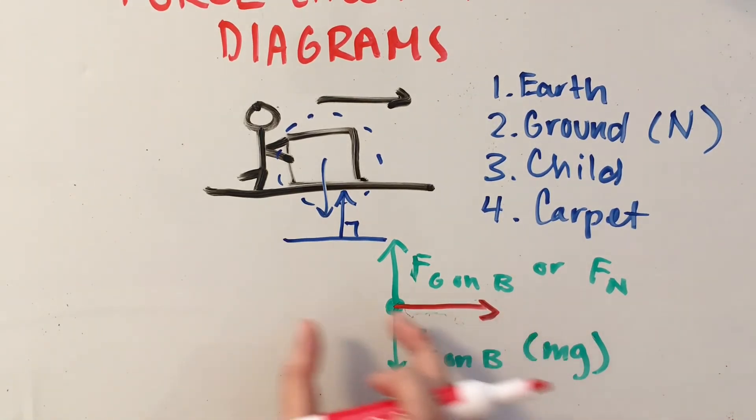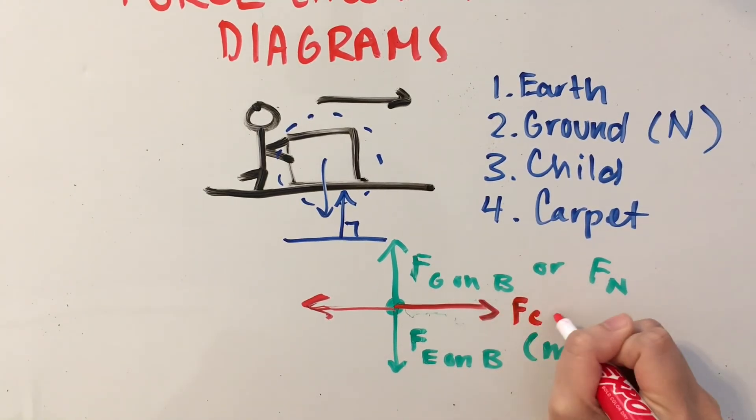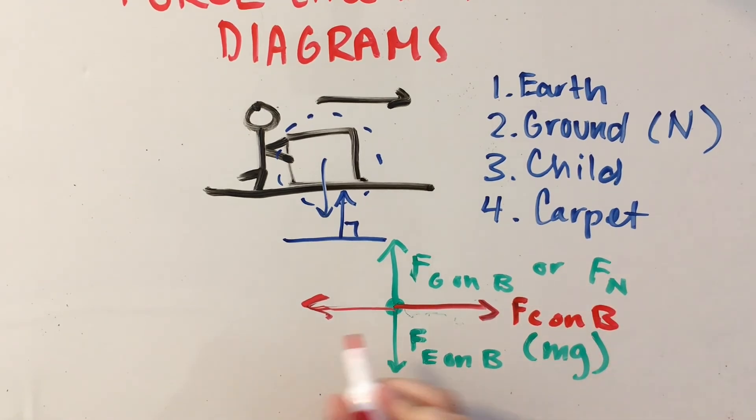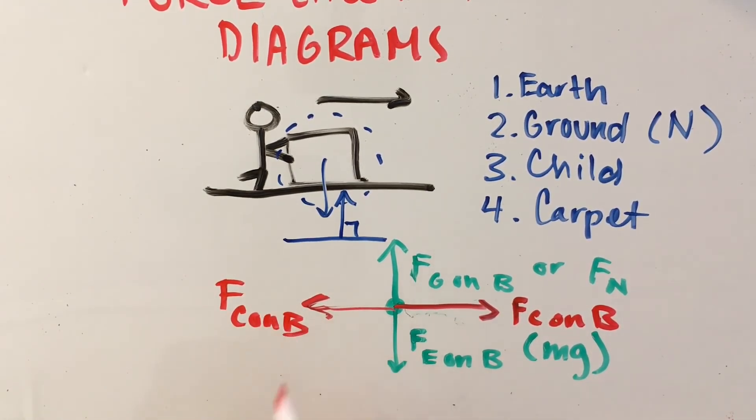These two forces must balance each other out, but they do not necessarily have to be the same length as these vertical forces. This force pushing to the right would be the force of the child on the box, and this would be the force of the carpet on the box, otherwise known as friction.